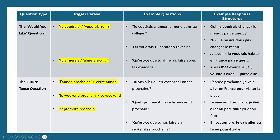'Après mes examens, je voudrais aller...' — I would like to go — then say where you'd like to go, and then 'parce que' and give a reason. Those are some different ways of answering the 'tu voudrais' question. I would make a note of those on flashcards.